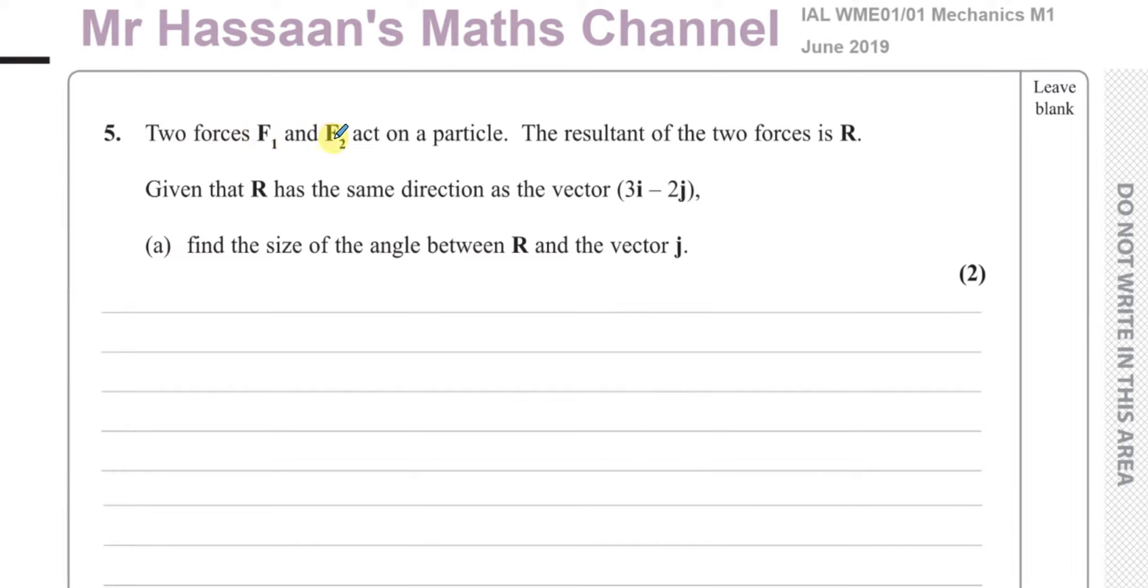It says two forces F1 and F2 act on a particle. The resultant of the two forces is R. So that means we can say F1 plus F2 is equal to R. When two forces are added together, the resultant is found by adding them together. Given that R has the same direction as 3i minus 2j, that means R is equal to some constant times 3i minus 2j. So I'm going to put a K to represent that constant.